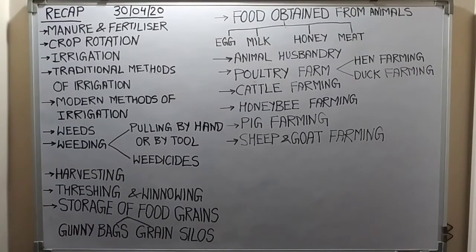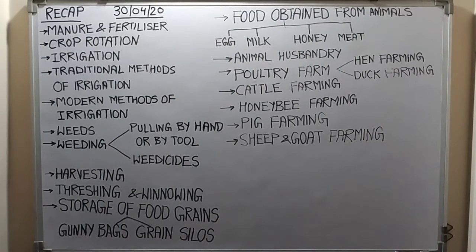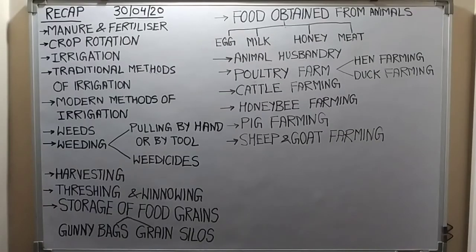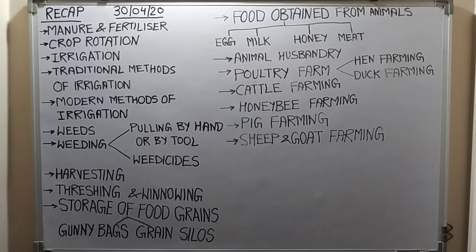Threshing is the next process after harvesting. Threshing means the process of beating out the grains from the harvested crop plants. In large farms, both harvesting and threshing are done by a machine called a combine. In small fields, as you can see in the picture, the farmer beats the crops on a hard surface like an iron drum, and here the grains are separated from the chaff — in India called 'bhusa', or hay.